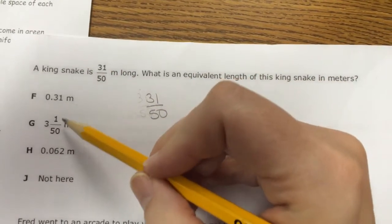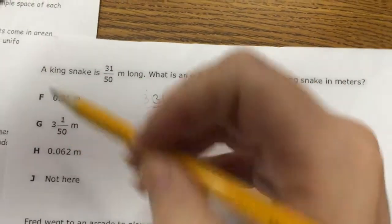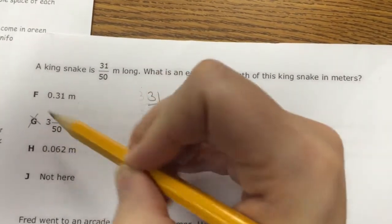Well, just from thinking, 3 and 1/50 meters, this is a whole number. I don't have a whole number here, so I automatically know that that one isn't right.